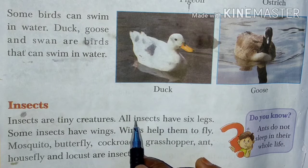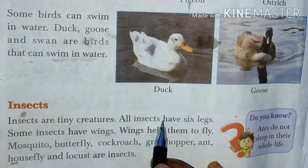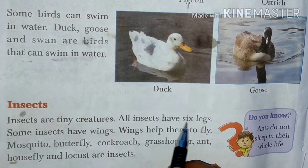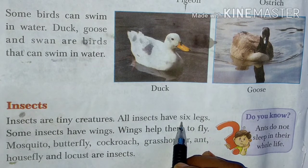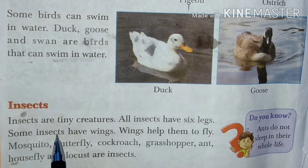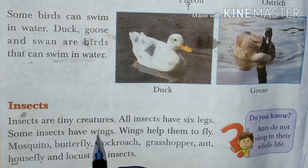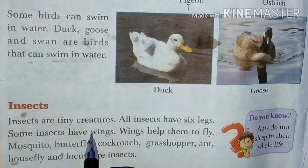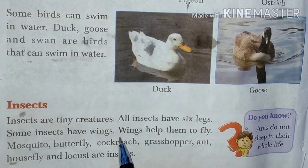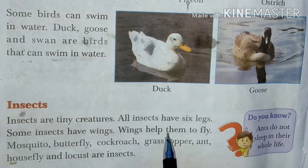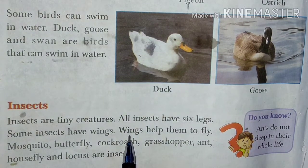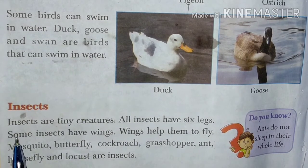All insects have six legs — yeh jo insects hote hain inke chhe pair hote hain. Some insects have wings — kuch insects aise hote hain jinke punk bhi hote hain. Wings help them to fly — inke jo punk hote hain woh unhe udne mein madad karte hain.